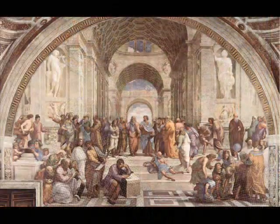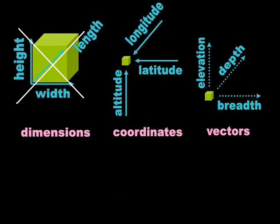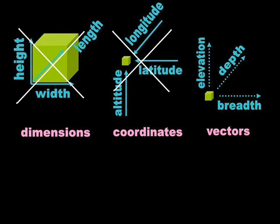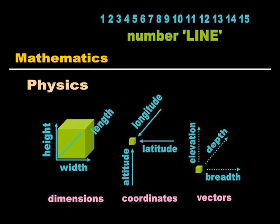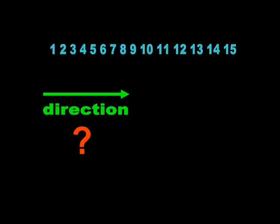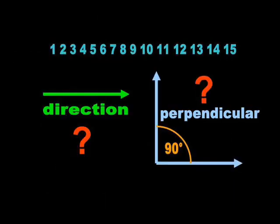The problem in mathematical physics is that the members of this religion have no use for the qualitative lines of physics. The mathematicians never use dimensions, coordinates, or vectors. They use number lines. A number line differs from the dimensions, coordinates, and vectors of physics in that it has neither direction nor orthogonality.